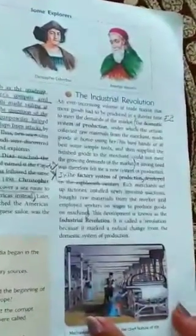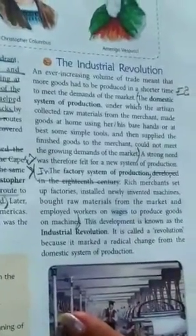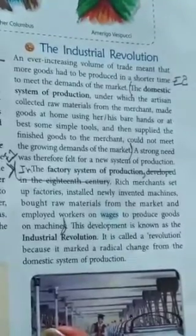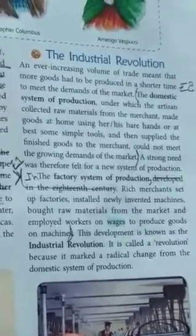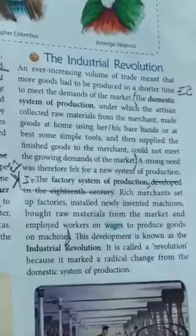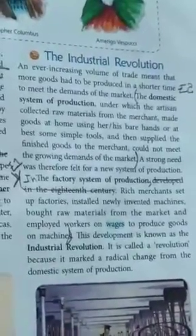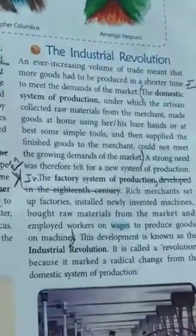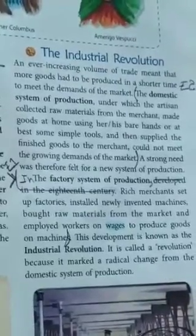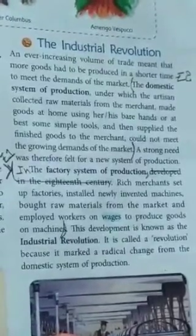The Industrial Revolution and the ever-increasing volume of trade meant that more goods had to be produced in a shorter time to meet the demands of the market. The domestic system of production, under which the artisan collected raw materials from the merchant, made goods at home using hands or simple tools, and then supplied finished goods to the merchant, could not meet the growing demands of the market. A strong need was therefore felt for a new system of production.